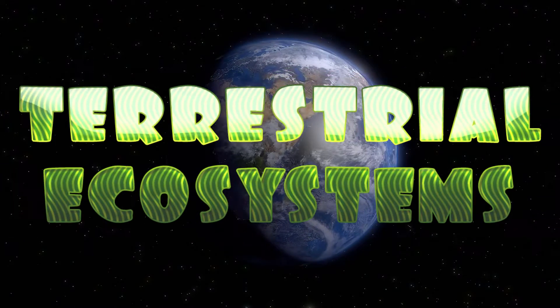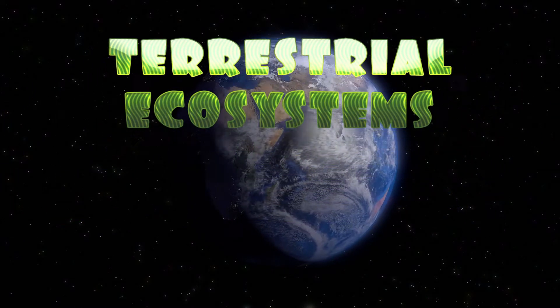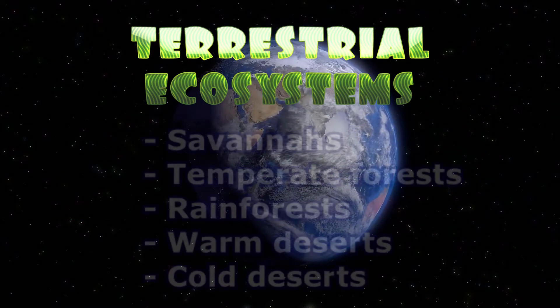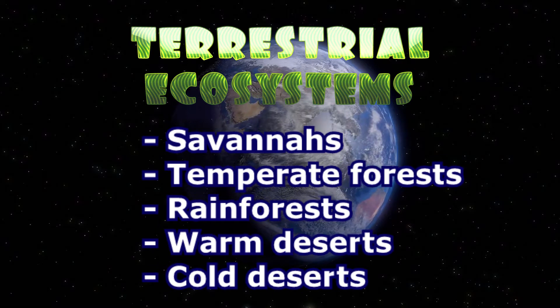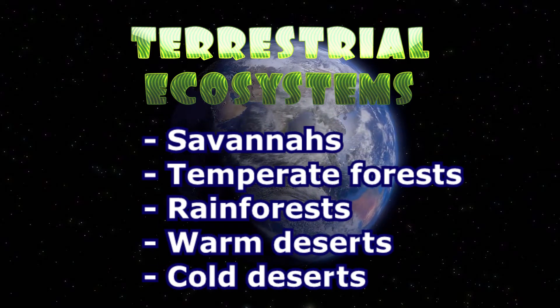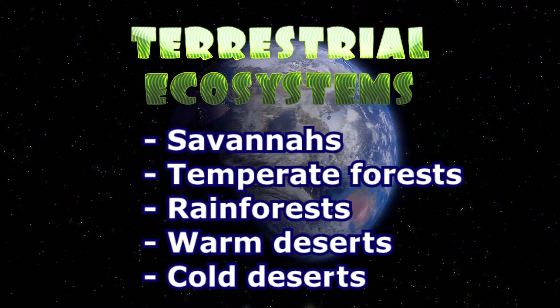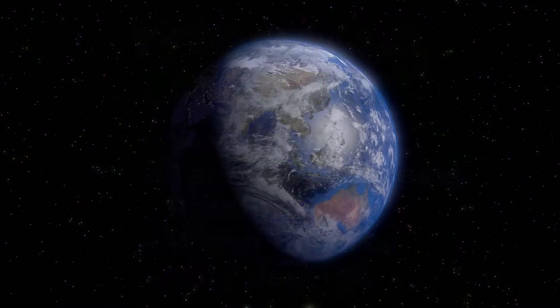In this video we're going to study five different terrestrial ecosystems: savannas, temperate forests, rain forests, warm deserts, and cold deserts.